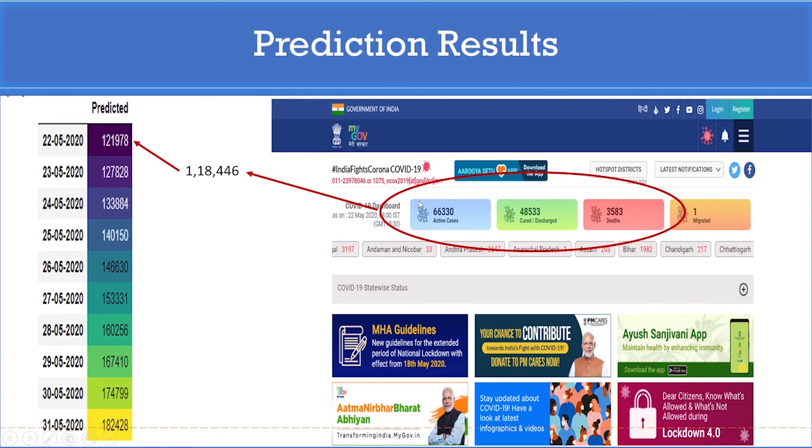For this comparison purpose, the official data from the website is taken for May 22nd, which is compared with the predicted value of polynomial regression. We can see the actual reported cases officially for May 22nd is 1,18,446, whereas our model predicted for the same date as 1,21,978. From this comparison, we can conclude that the model provides the prediction with some degree of deviation.